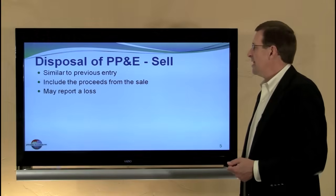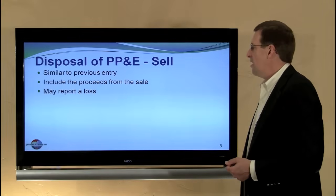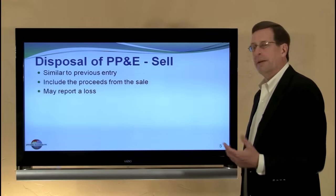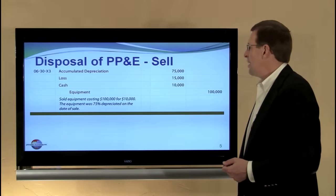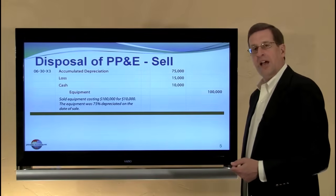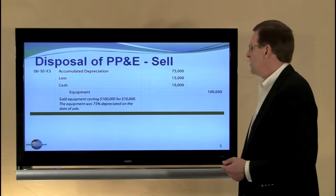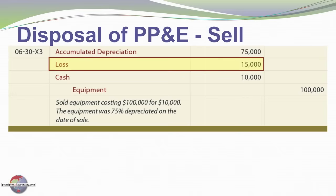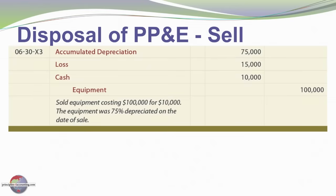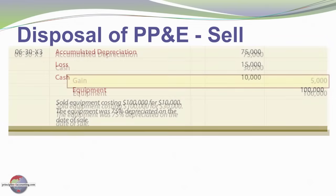Now let's look at the situation where we're actually going to sell the asset. It's similar to the previous entry, but this time we're getting $10,000 cash for the sale of the asset. We're left with only a $15,000 loss because we managed to pull $10,000 out of the deal. Again, it was carried at $25,000 net and we're removing equipment and accumulated depreciation.